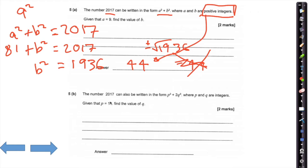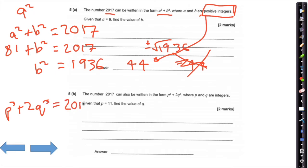The second part of question five: the number 2017 can also be written in this form — we've got another equation. This time we're saying p cubed plus 2q cubed equals 2017.